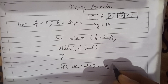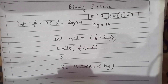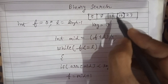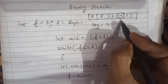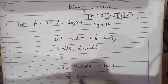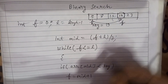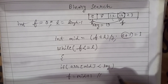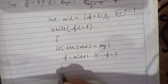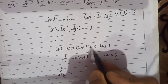If the mid element is smaller than our searching key — 12 is lesser than 19, which is true — in that case, we shift f to mid plus 1. So f, which was at 0, now becomes mid plus 1, that is 2 plus 1 = 3. Now the value of f is 3. This is how the first pointer shifts forward.